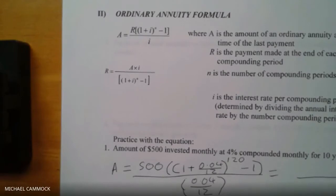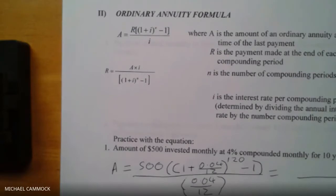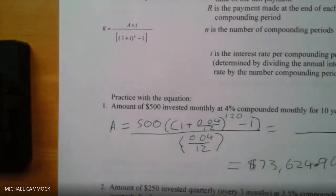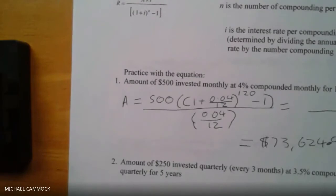So: $73,624.90. Think about what this means — if you put $500 into the bank every single month for 10 years, after 10 years that's how much money you have in the bank, with all the interest included.